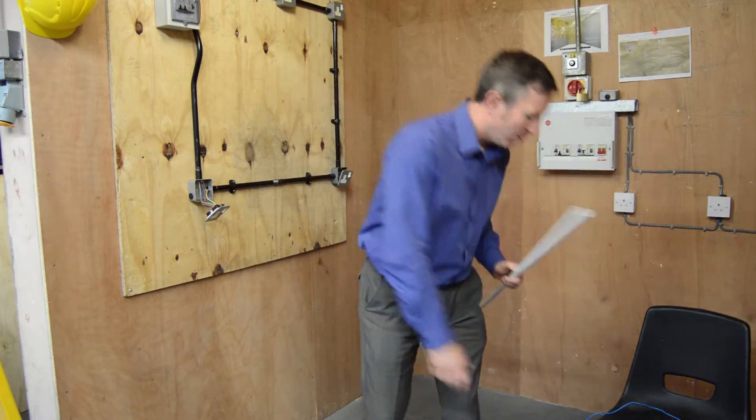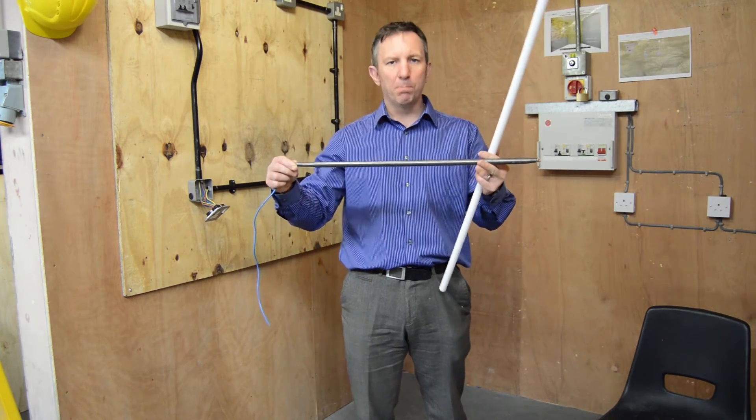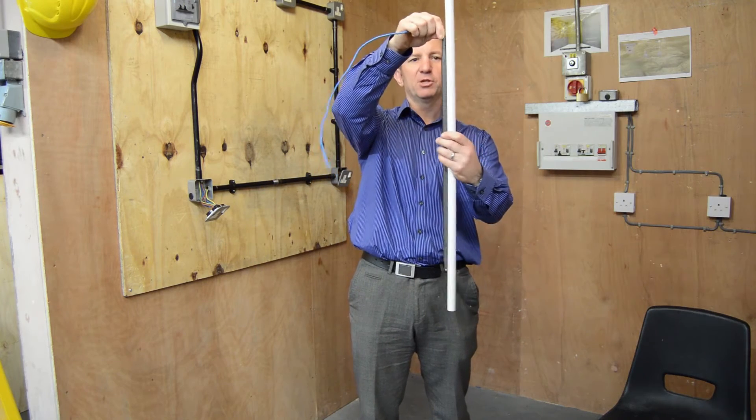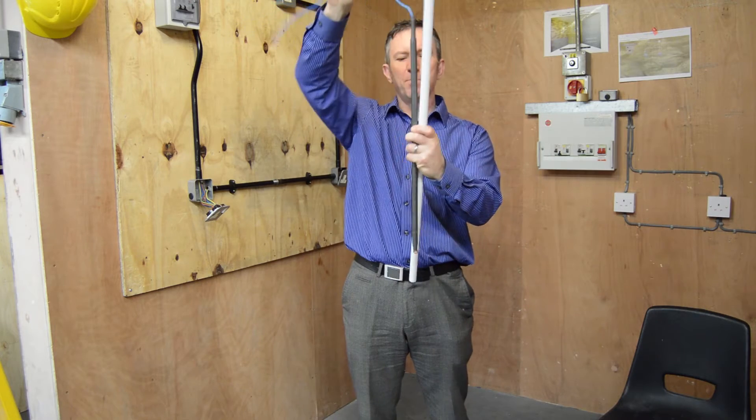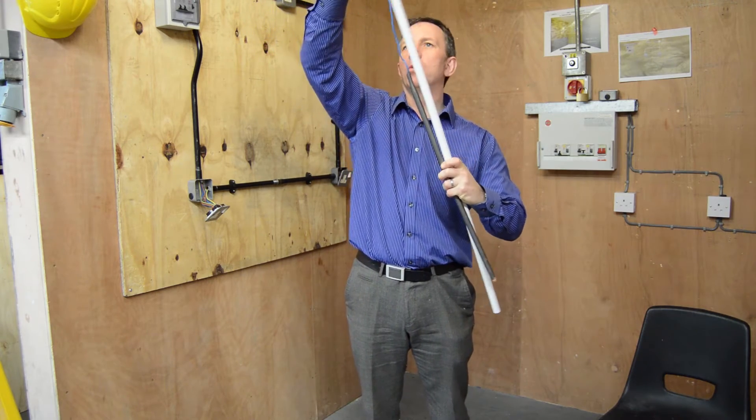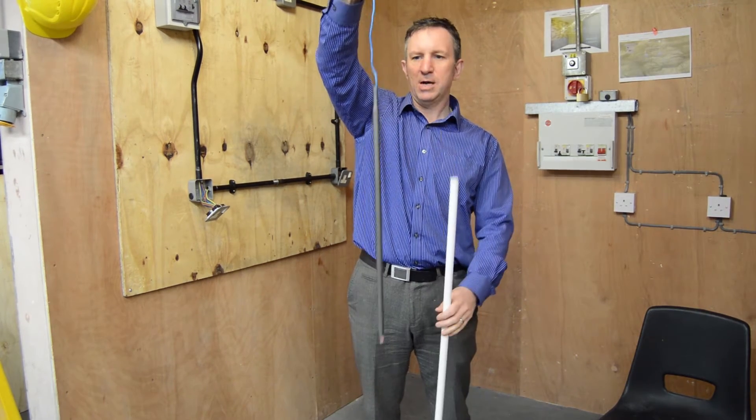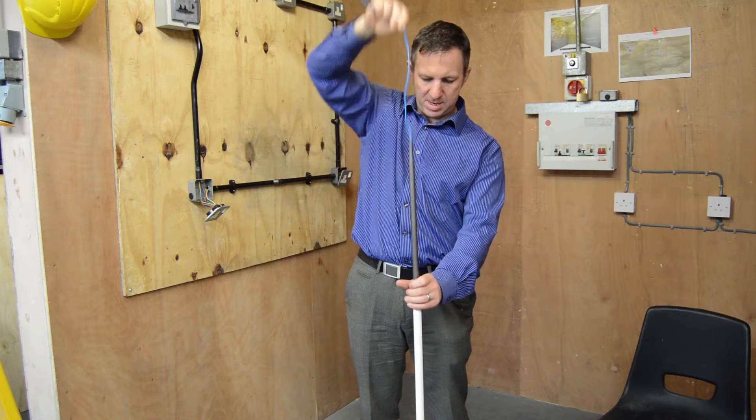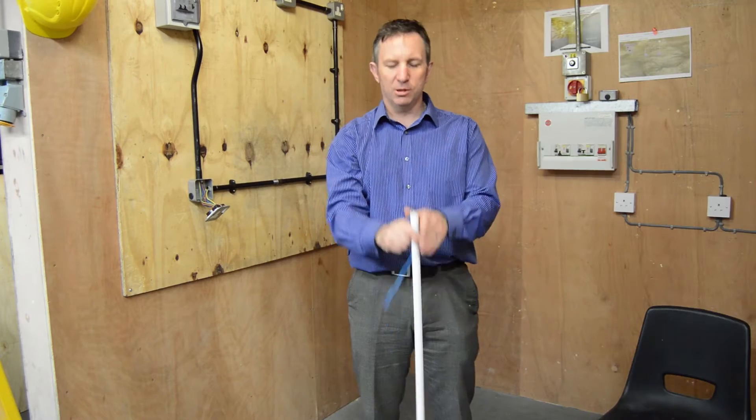We've then got to use our 20 millimeter bending spring. Take your bending spring to the mark, ensuring the middle of the bending spring goes in line with our mark. Then hold the cable, enter the bending spring, and once the cable gets down to the bottom, we know that bending spring is exactly halfway at our mark.